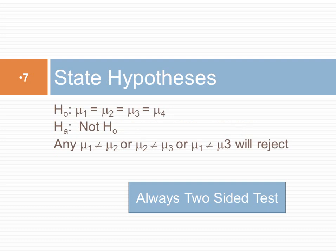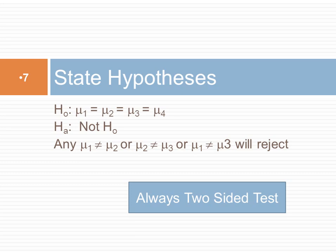The next step in our framework is to state the hypothesis. In the context of comparisons of three means, the null hypothesis is always stated as equality. The null hypothesis for comparisons of four means is that all four means are equal. The alternative hypothesis is that the null hypothesis is not true, so this could occur when one of the means is different — it doesn't require that all of them are different from each other, just one of them. Because our null hypothesis is an equality, the alternative is not equal, so we are doing a two-sided test.